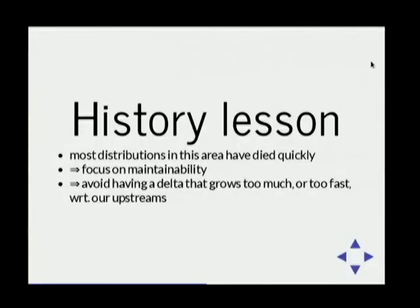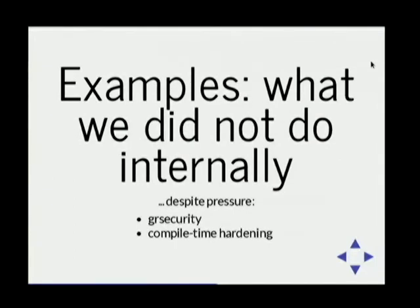In our area — privacy and anonymity-focused distributions — most projects have lived one to two years maximum for various reasons. So from the very beginning of this project, we've taken a quite hard stance on maintainability, trying to keep our delta as small as possible in order not to build an ever-growing technical debt and pile of things we'd have to maintain ourselves forever. For example, there are things we'd like to have but didn't do internally, like having a grsec-patched kernel — that should be done in Debian instead.